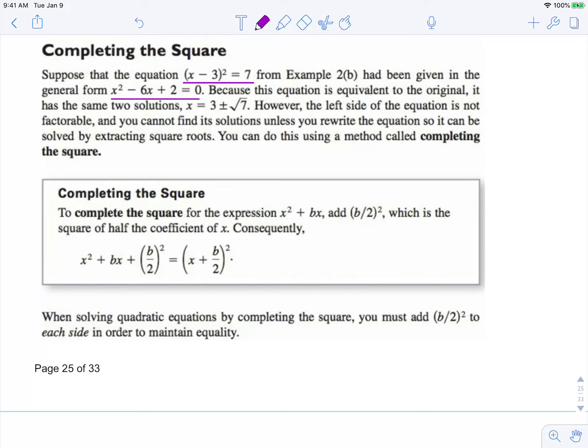These two equations are equivalent, so therefore they have the same solution, x equals 3 plus or minus square root 7. However, the left-hand side of the equation is not factorable, and you cannot find its solutions unless you rewrite it so it can be solved by extracting square roots.